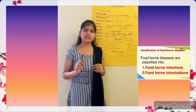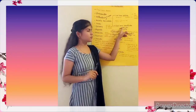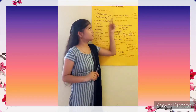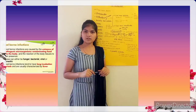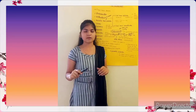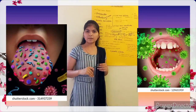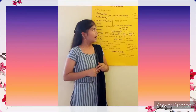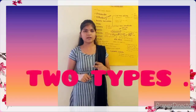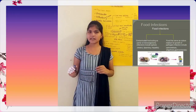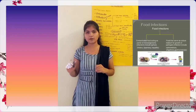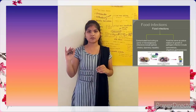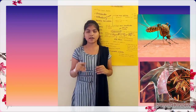Foodborne diseases are classified into two types: foodborne infection and foodborne intoxication. Foodborne infection is caused by the entrance of microorganisms into the body through contaminated food and the reaction of the body to their metabolites. Foodborne infection is again classified into two types. The first type is when the food is contaminated but does not ordinarily support the growth of pathogens — it acts as a carrier for the microorganisms. Examples of this type are tuberculosis, diphtheria, cholera, typhoid fever, and others.